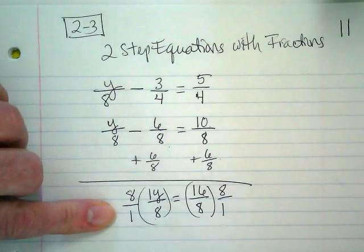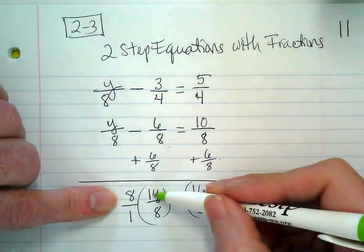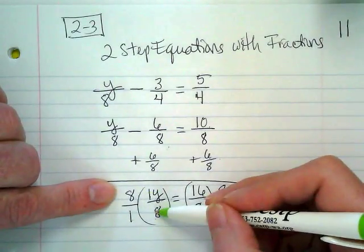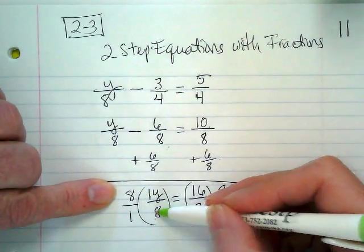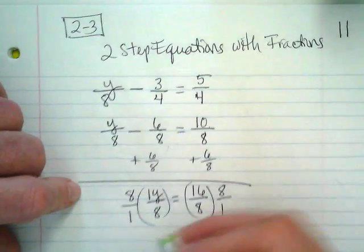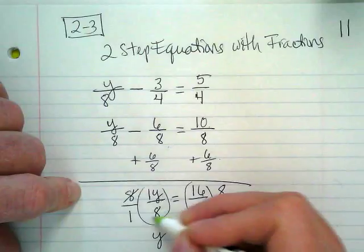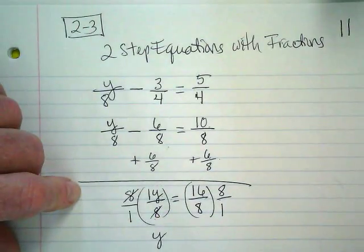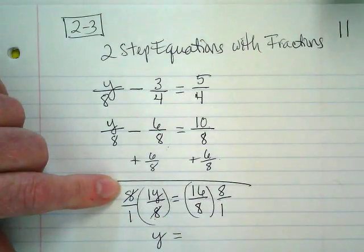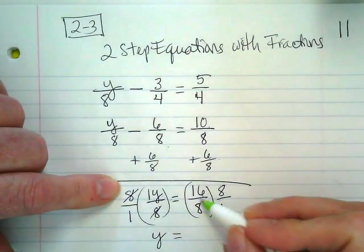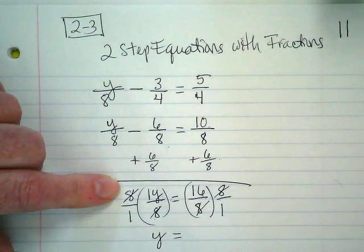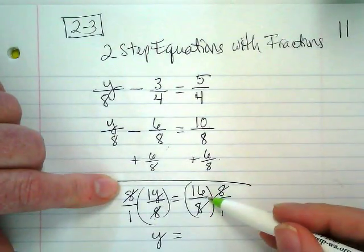8 times 1 is 8, 1 times 8 is 8. So 8 over 8 cancels out to become an invisible one, leaving the Y by itself. This and this cancel each other out. And then this and this cancels each other out, leaving us with just 16.